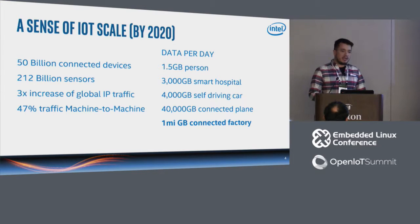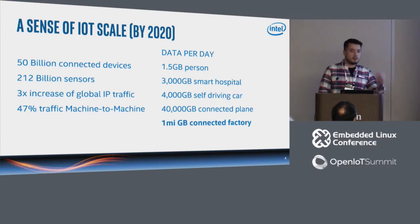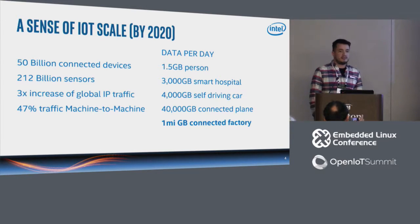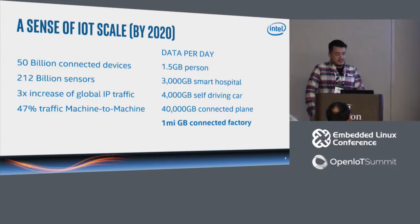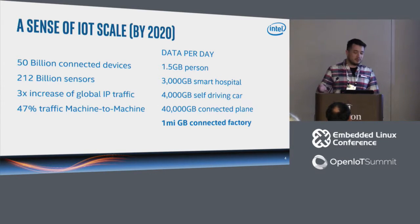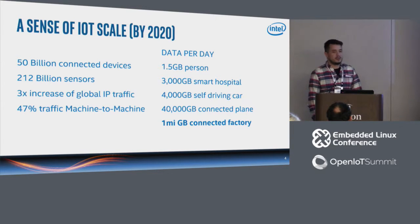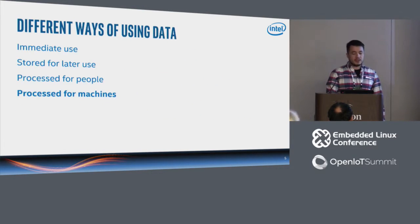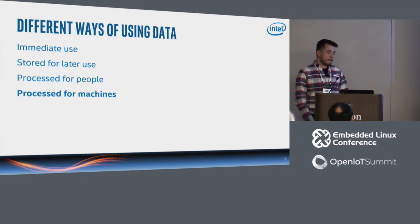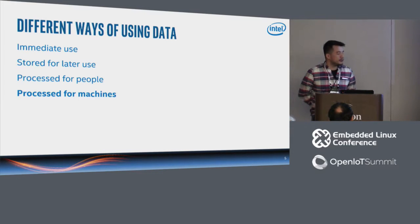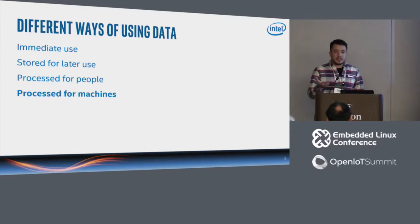In many talks there's a lot of predictions about billions of devices generating a huge amount of data. I highlight that there's one million gigabytes of data produced in a connected factory. So I thought about what the ways are you using that data. I like to make an analogy with a camera.